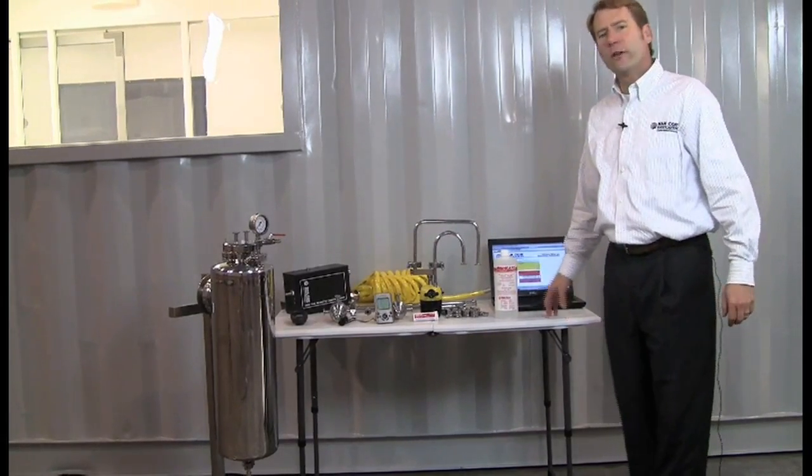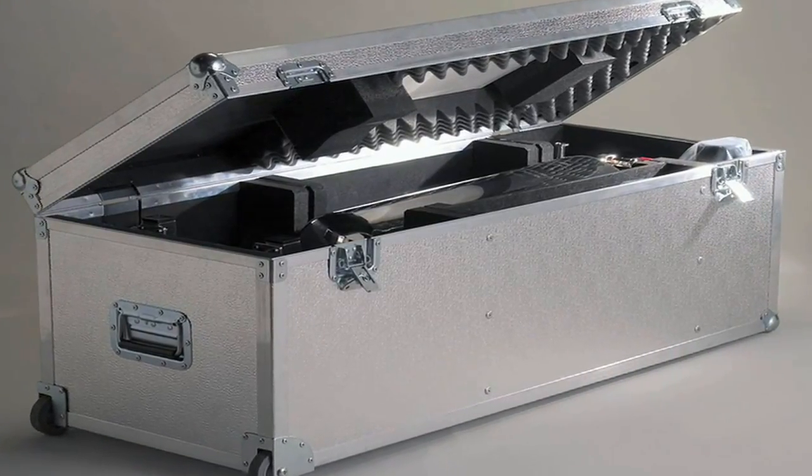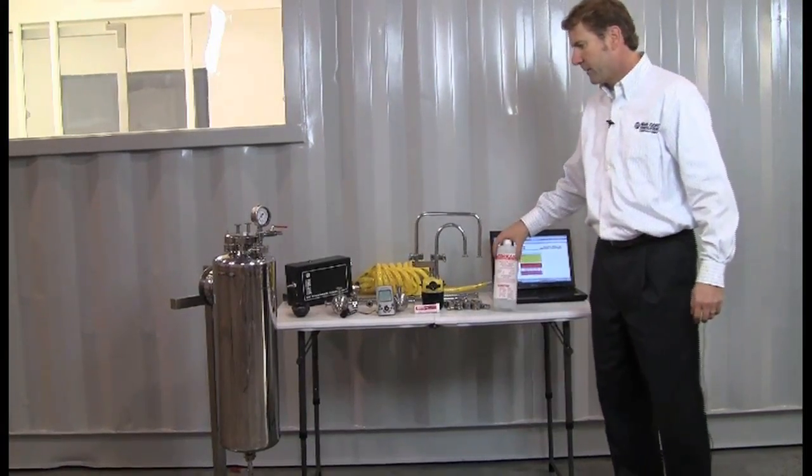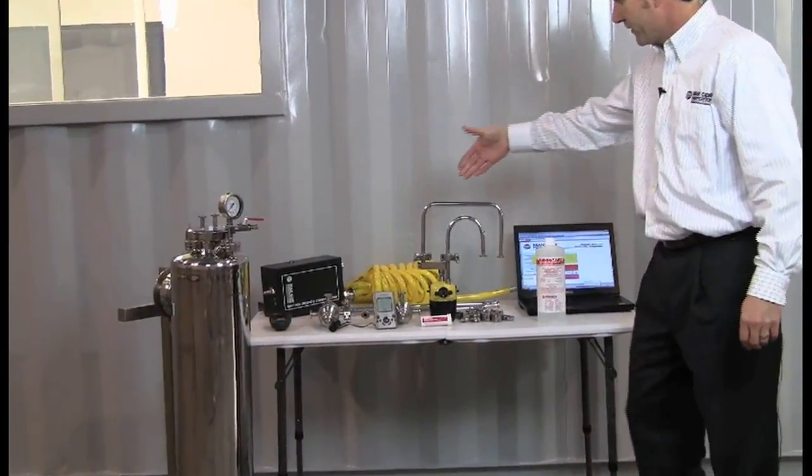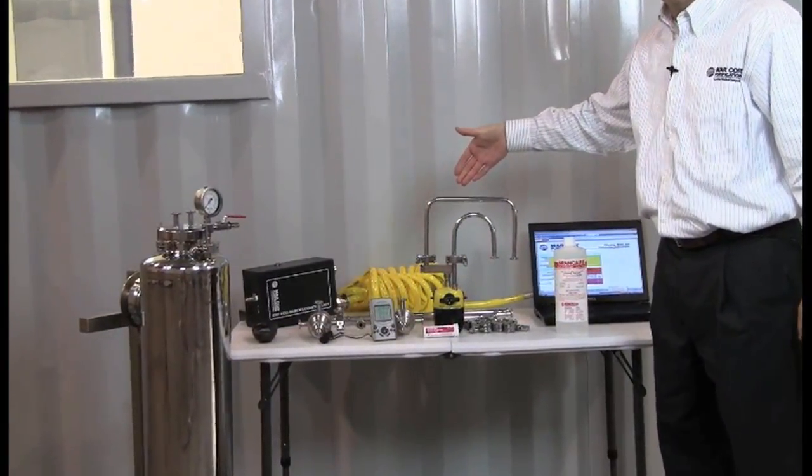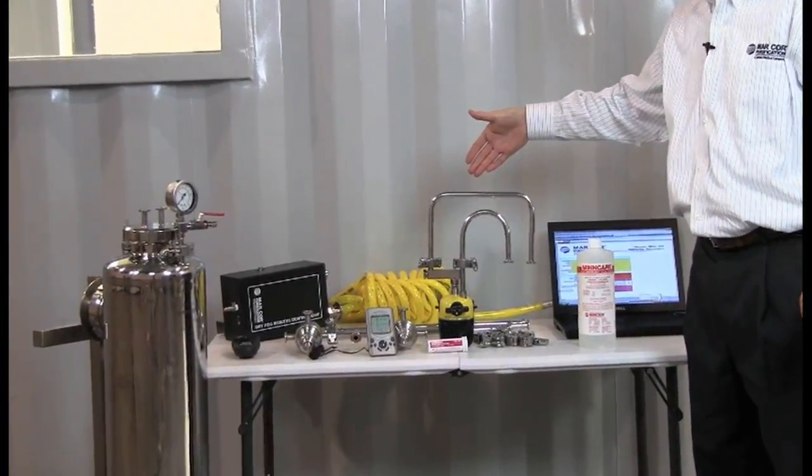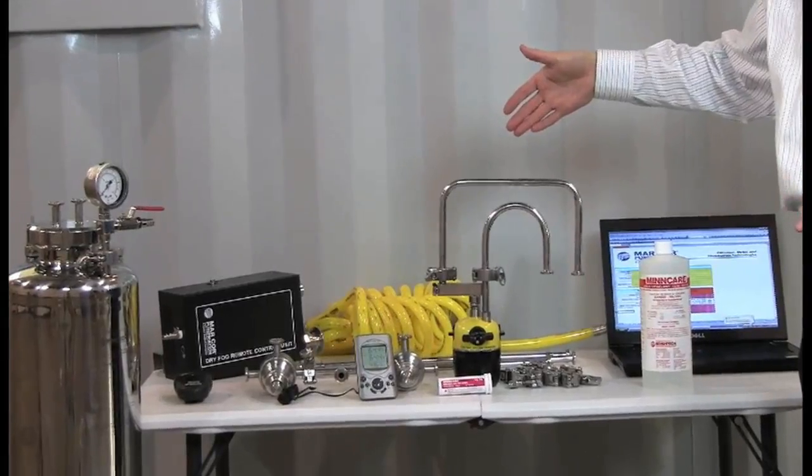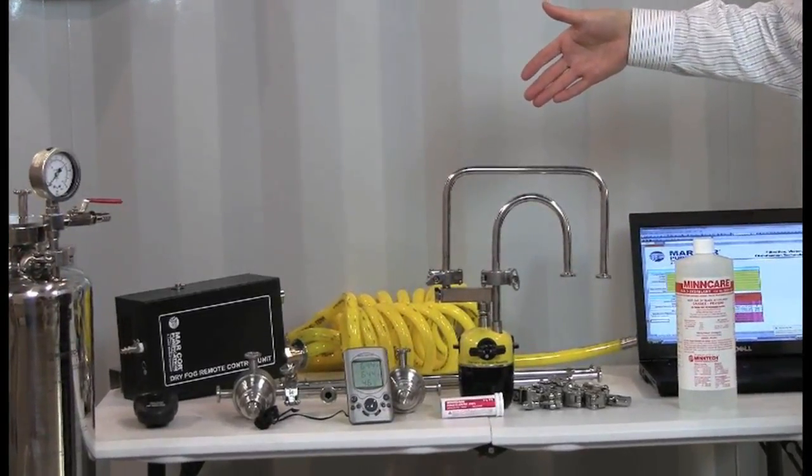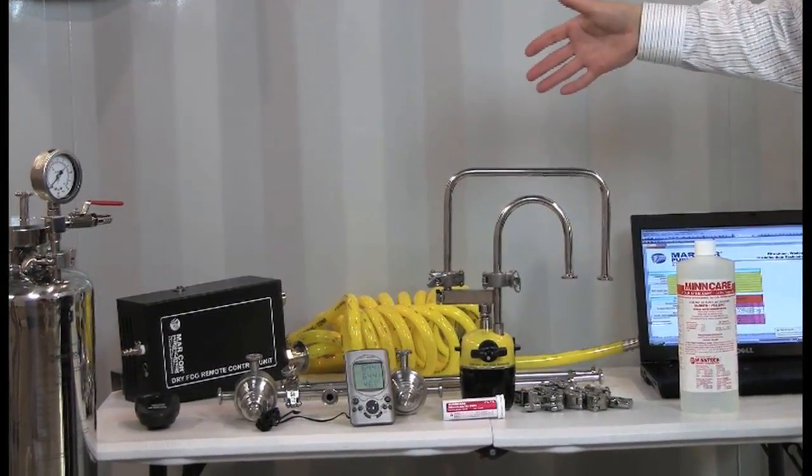These are the components to the Markor dry fog system. Markor dry fog system utilizes MinCare that goes in the tank. This is the head, which is actually the heart of the unit that puts out the 7.5 micron droplet and gives you the ability to disinfect 35,000 cubic feet of clean room at one time.